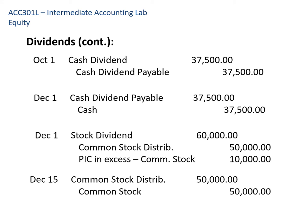So when we have par values for stock, whether preferred or common stock, we're always going to be crediting common stock or preferred stock for the par value — never more.